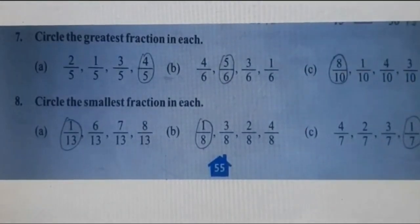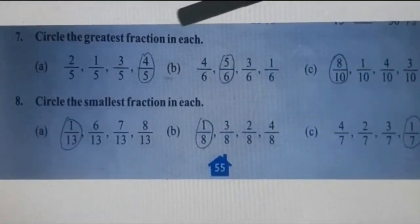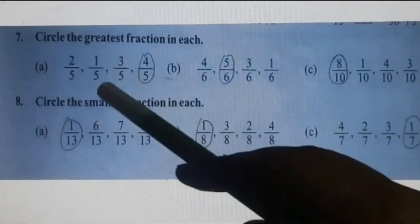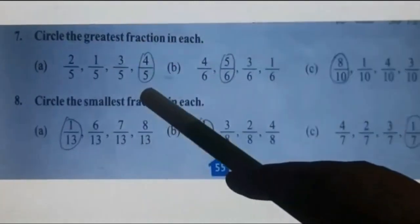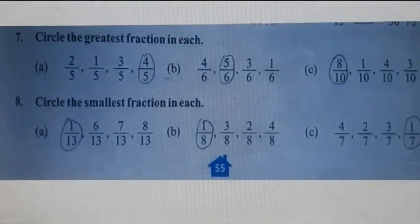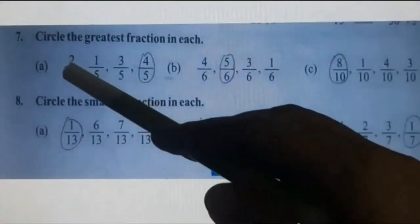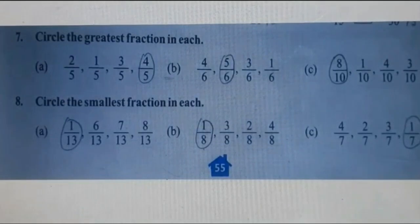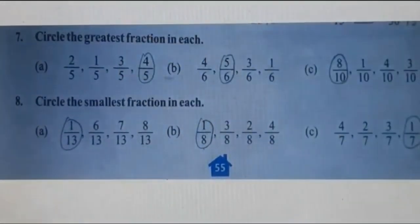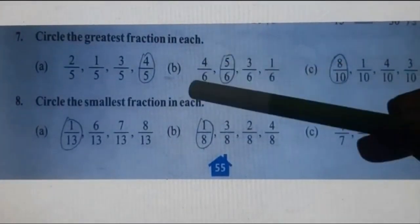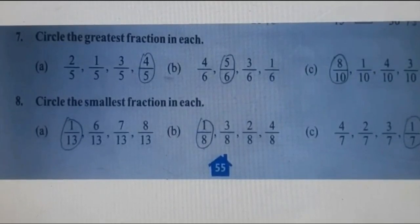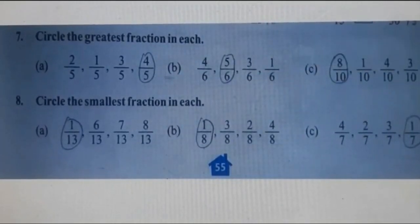Question number 7: circle the greatest fraction in each. Part A: 2 upon 5, 1 upon 5, 3 upon 5, 4 upon 5. Denominators are the same — like fractions — so check the numerator. The fraction with the greatest numerator is greatest. So the greatest fraction is 4 upon 5. Part B: 4 upon 6, 5 upon 6, 3 upon 6, 1 upon 6. Greatest fraction is 5 upon 6.